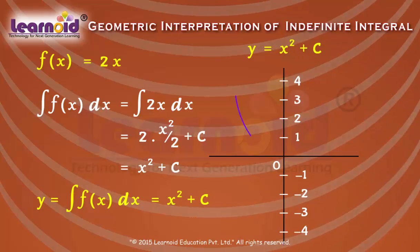For c = 0, y = x squared is a parabola passing through the origin. For c = 1, y = x squared plus 1 is a parabola passing through y = 1.